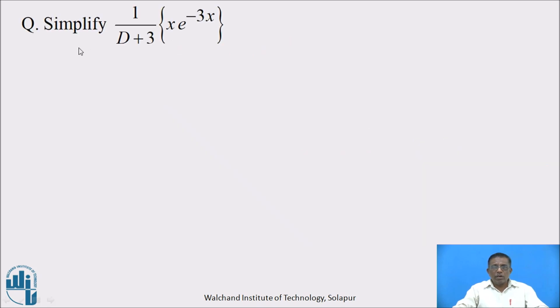Let us pause the video and write the answer to the question. The question is: simplify 1/(D+3) operated on x·e^(-3x).